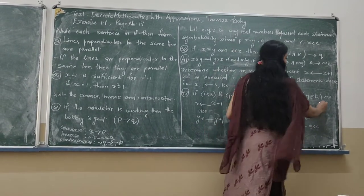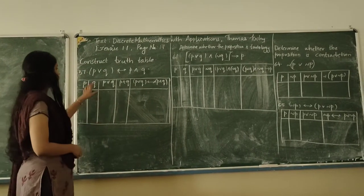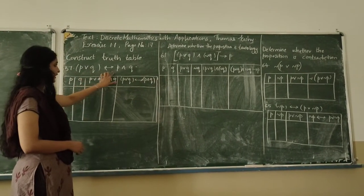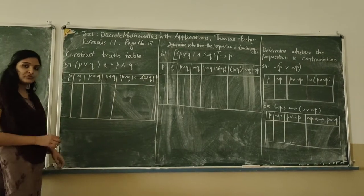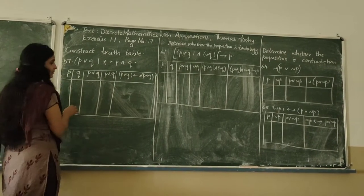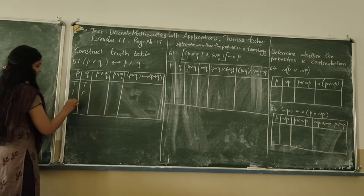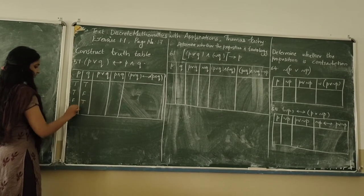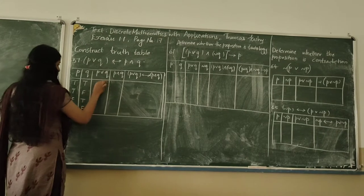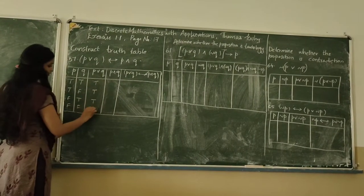The next question is about constructing the truth table for the given proposition P or Q. P and Q can take both true and false values. The truth table rows are: true/true giving true, true/false giving true, false/true giving true, and false/false giving false.